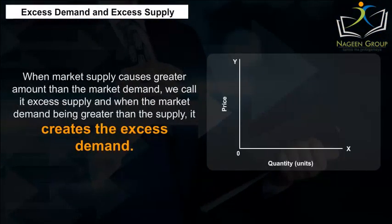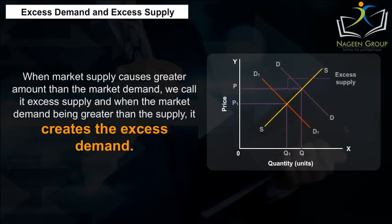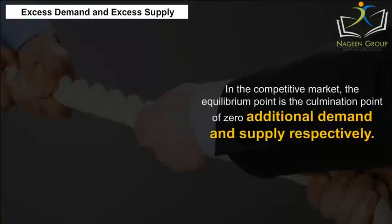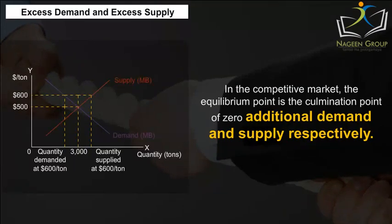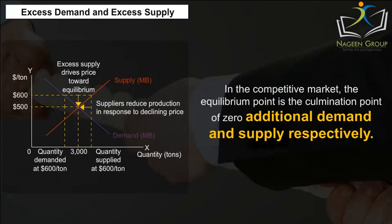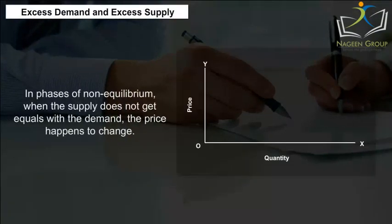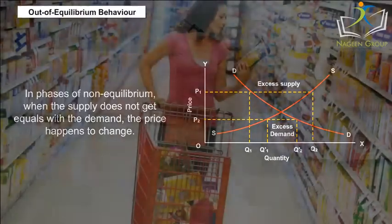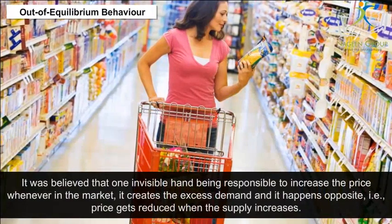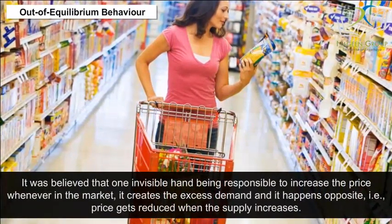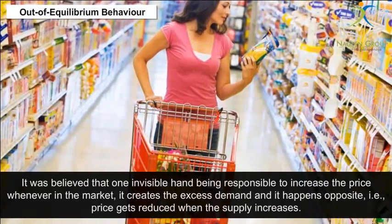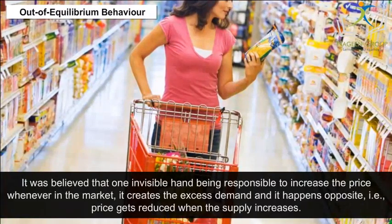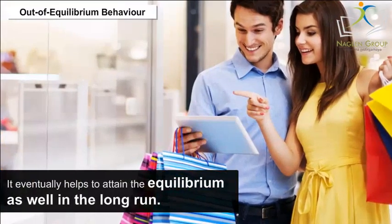Excess demand and excess supply: When market supply is greater than market demand, we call it excess supply. When market demand is greater than supply, it creates excess demand. In the competitive market, the equilibrium point is the culmination of zero additional demand and supply. In phases of non-equilibrium, when supply does not equal demand, the price changes. Out-of-equilibrium behavior: one invisible hand is responsible for increasing the price whenever excess demand exists in the market, and price gets reduced when supply increases, eventually helping to attain equilibrium in the long run.